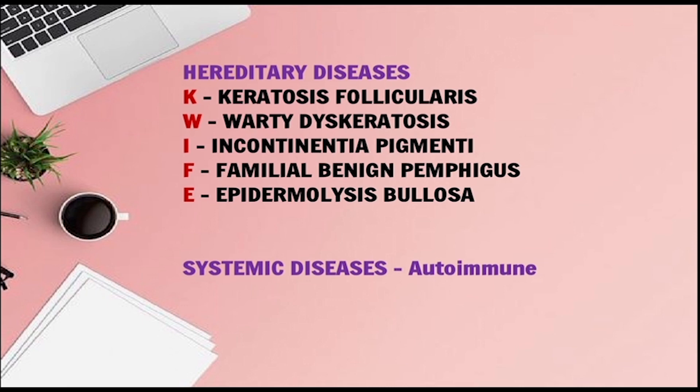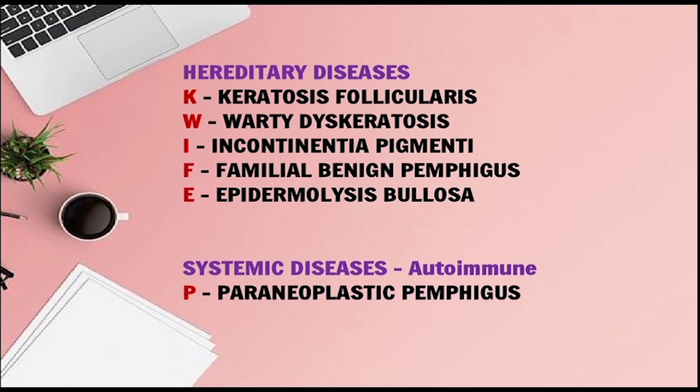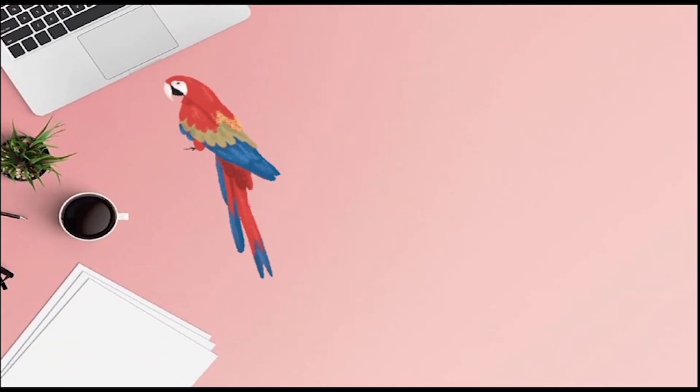Now let's see — parallelly someone else was trying to contact somebody else. That is talking about systemic diseases, which are divided into autoimmune and metabolic. For autoimmune diseases: P for Paraneoplastic Pemphigus.